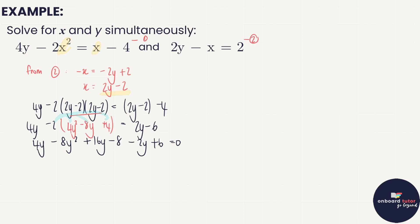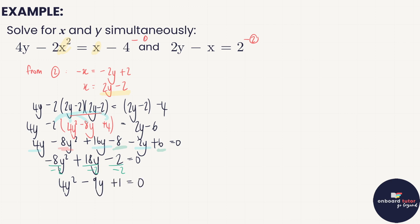Collecting like terms: just one y squared term giving minus eight y squared, then the y terms: four y plus sixteen y minus two y gives plus eighteen y, and the constants minus eight plus six gives minus two. So minus eight y squared plus eighteen y minus two equals zero. All terms are divisible by minus two, so dividing through gives four y squared minus nine y plus one equals zero.